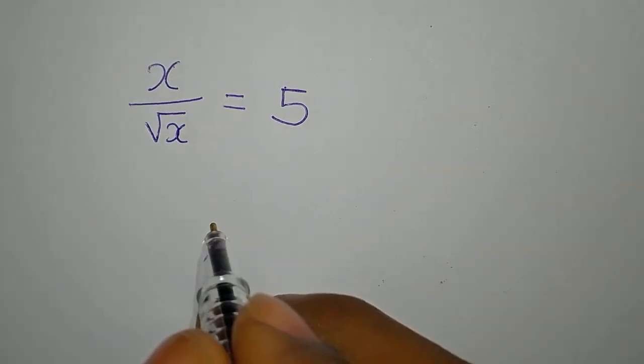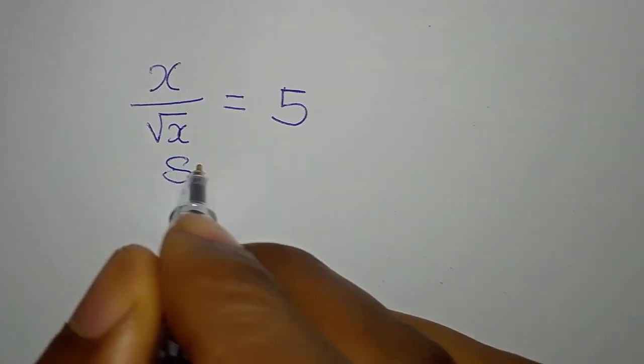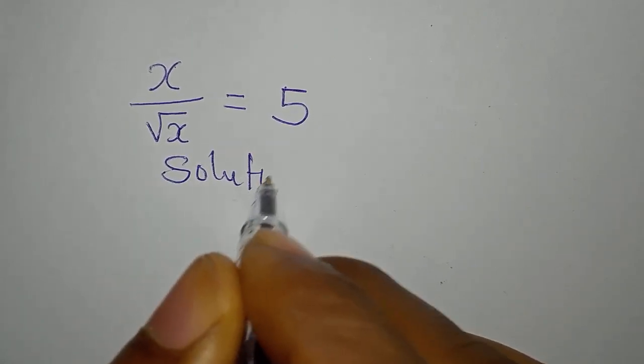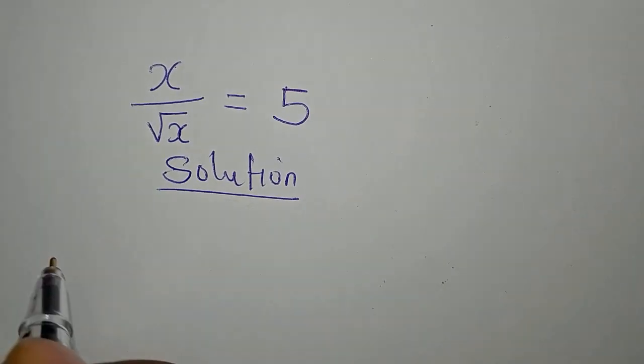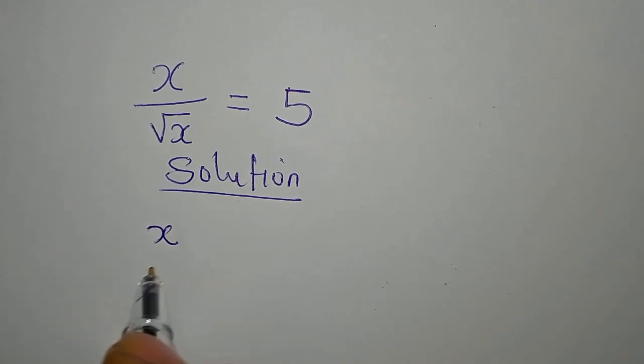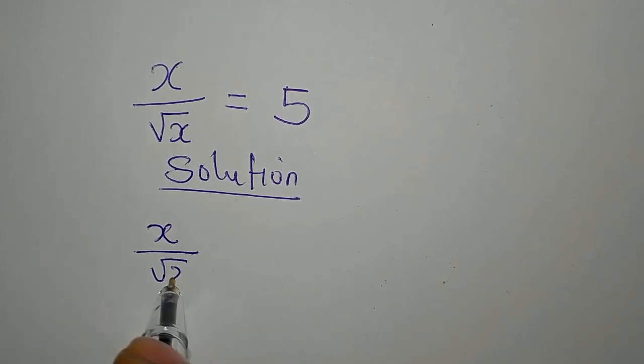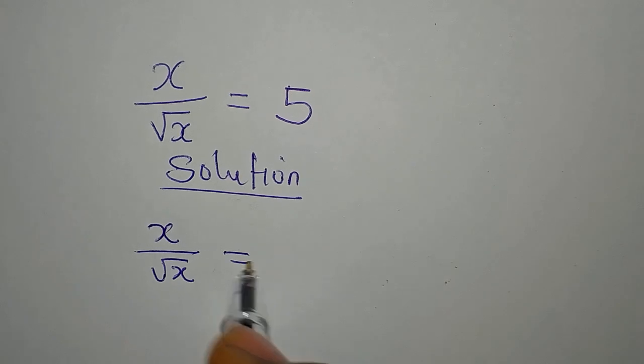Hello everyone. Let's provide the solution to this very quickly. We have x over square root of x equals 5.